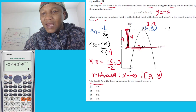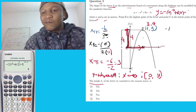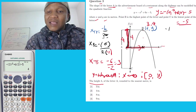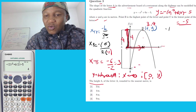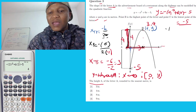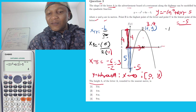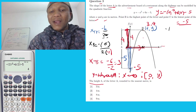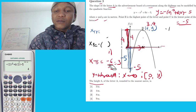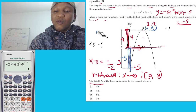So y-intercept equals negative (0) squared plus 6 times 0 minus 5, which gives negative 5. So the y-intercept equals negative 5. This means the length from the x-axis down to the y-intercept is negative 5 — so that segment has a length of 5 units. Now let's find the total length.